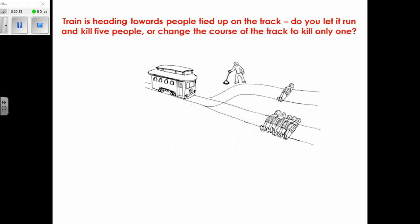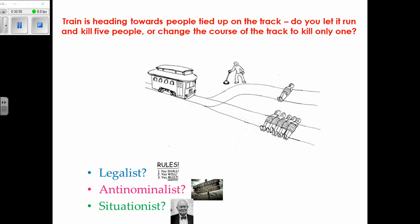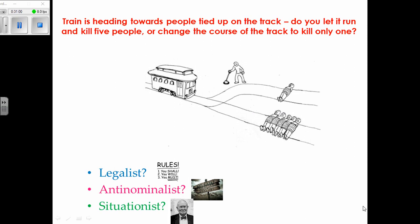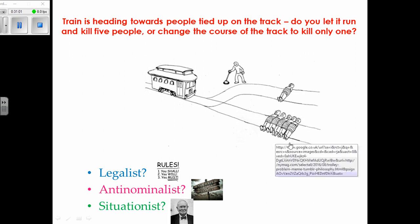In the trolley problem — let the train kill five people or change the track to kill one — similar to the fat man example: the legalist would say do not kill, so you let the train kill five. The situationist would say in this situation it is okay to kill because you are showing more love to more people.